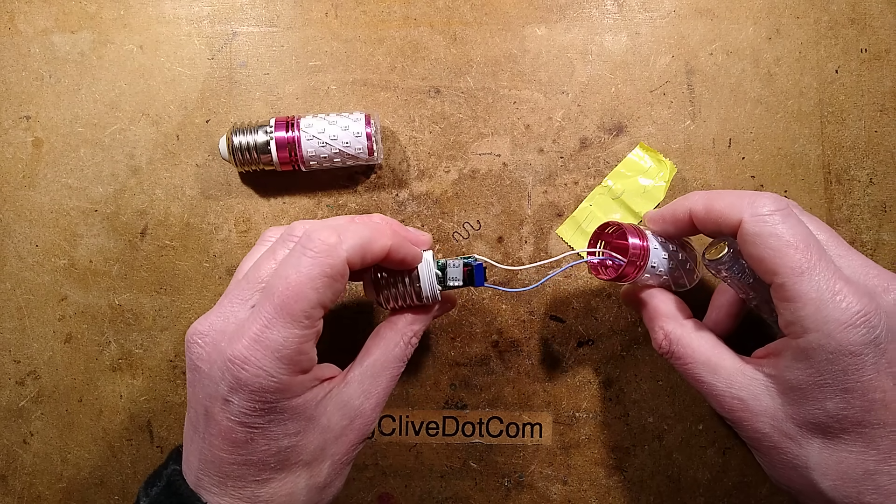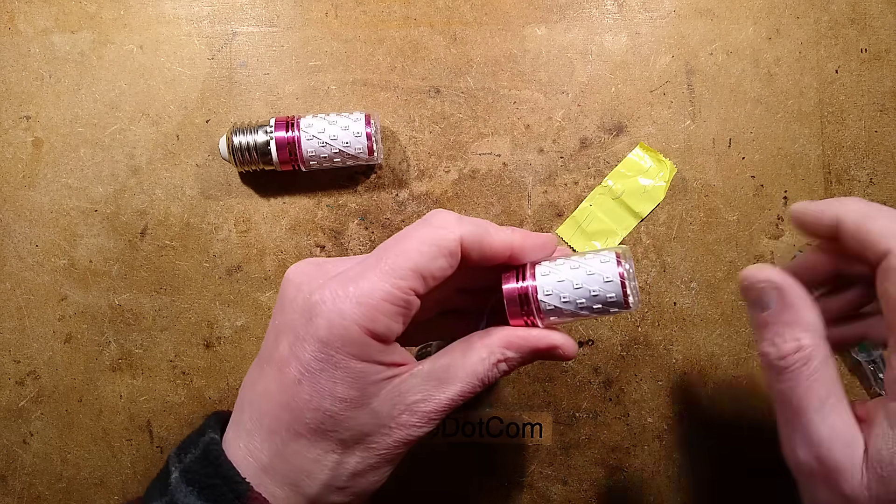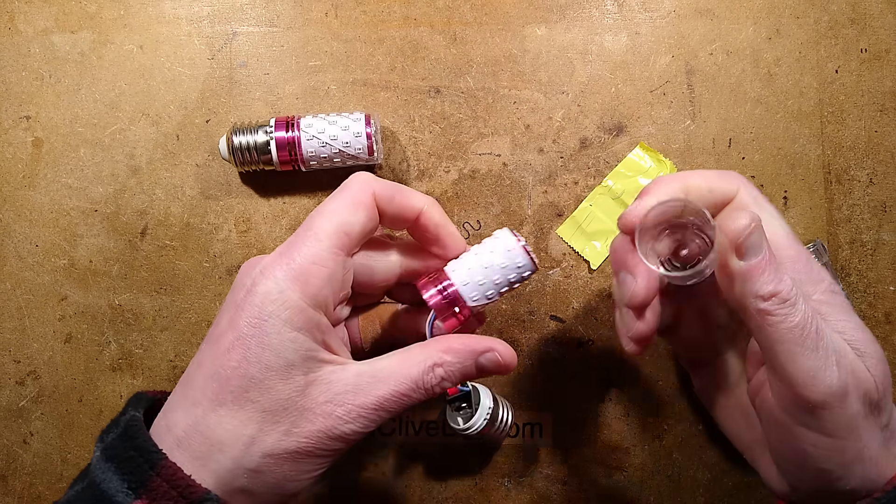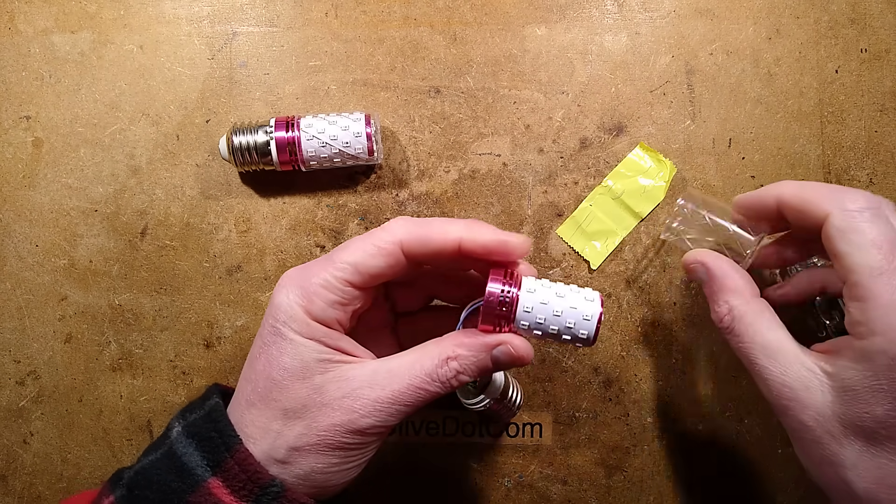So, that is the 6.8 microfarad. It's got 450 volt. I just thought I'd mention that. Now, what I should have done before. Oh no, that came off quite easily, actually. Oh, that's because it's cracked. Lovely.